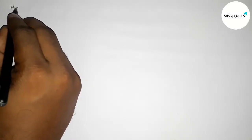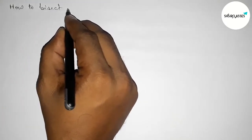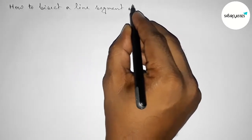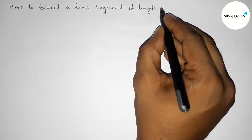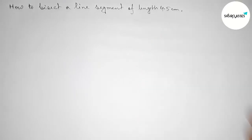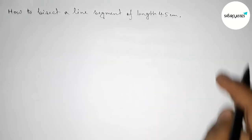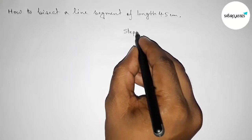Hi everyone, welcome to Essay Share Classes. Today we're discussing how to bisect a line segment of length 4.5 centimeters by using a compass in an easy way. So let's start the video. First of all, leaving here some space to write down the steps of construction.